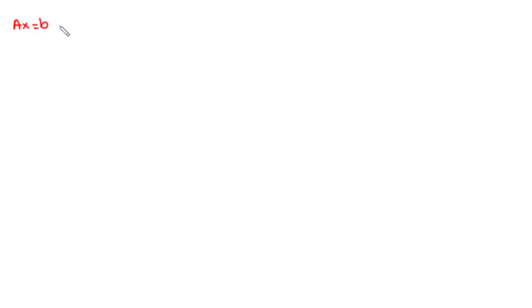Hello and welcome back to this channel. In this lesson we are going to start a new course on numerical analysis, and specifically we are going to learn how to solve a system of n linear equations with n unknowns using the naive Gaussian elimination method. This method is basically used to reduce a system of equations of the form Ax equals b to an upper triangular system of the form Ux equals z using elementary row operations.